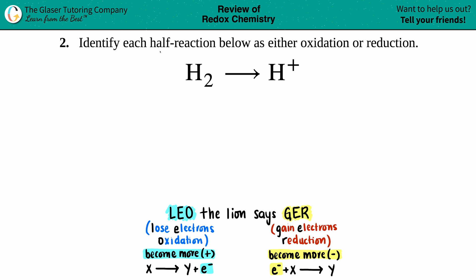Number two: identify each half reaction below as either oxidation or reduction. We have H₂ which will yield H⁺. Now whenever we're dealing with oxidation or reduction, reduction oxidation, or redox...